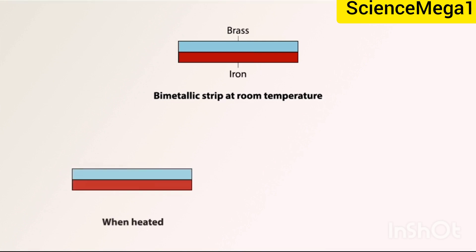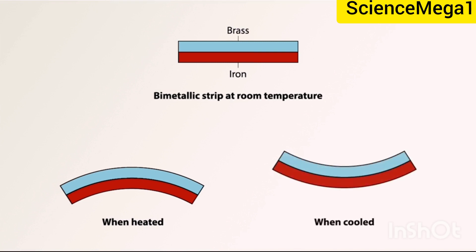When heated in a flame, the strip begins to curve with the brass on the outside showing that the expansion of the brass is greater than that of the iron for the same change of temperature as shown on your screen. And I hope you are observing those carefully. Good, let's continue.